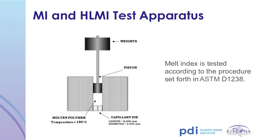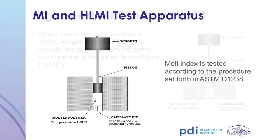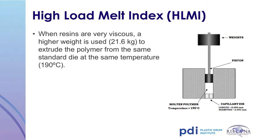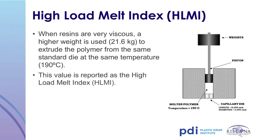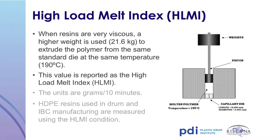The melt index test is conducted in accordance with standard ASTM procedures by loading resin into a testing chamber held at 190 degrees centigrade to melt the resin. A calibrated weight of 2.16 kilograms is added to the test piston, which pushes the melted resin through a capillary die of a specific diameter. The amount of resin that flows through the orifice during a specified time is weighed and recorded in grams per 10 minutes. If a resin is extremely viscous, a high-load melt index test using 21.6 kilograms is conducted. High-load melt index resins, nicknamed HLMI, are generally used to produce drums and IBCs.